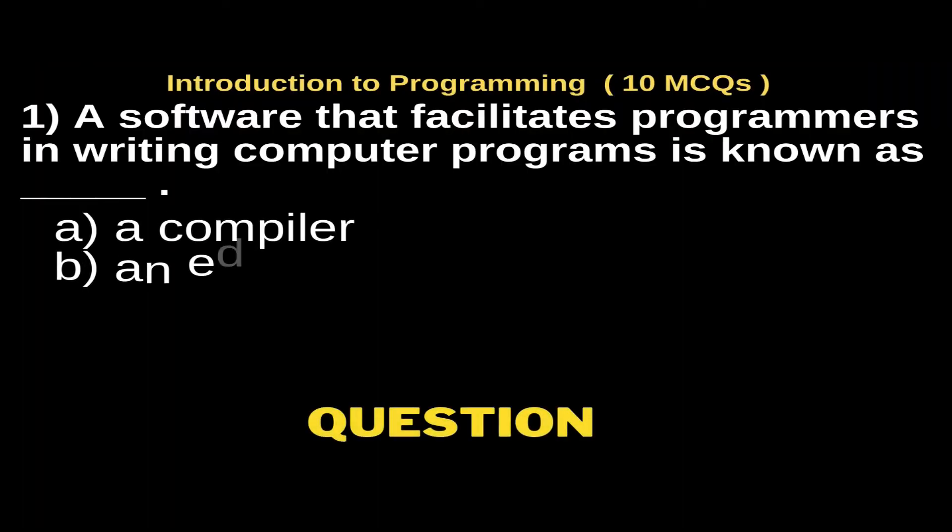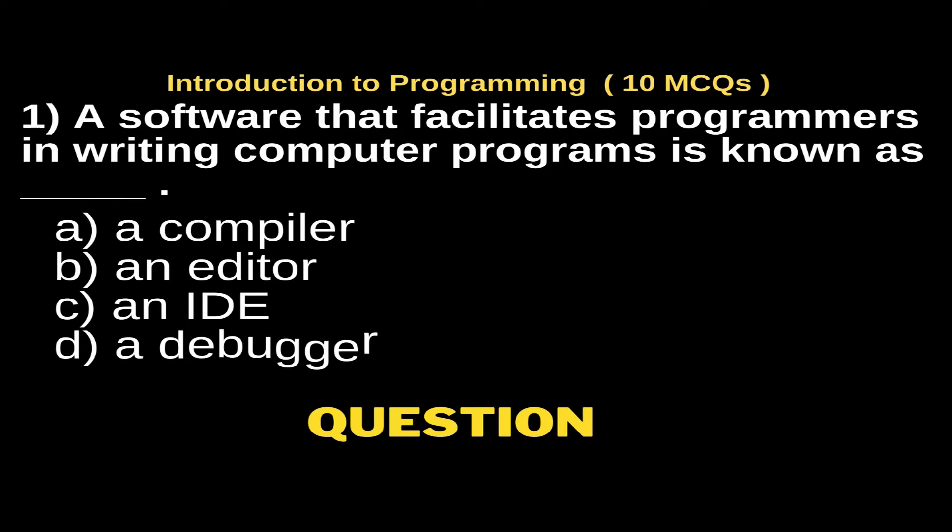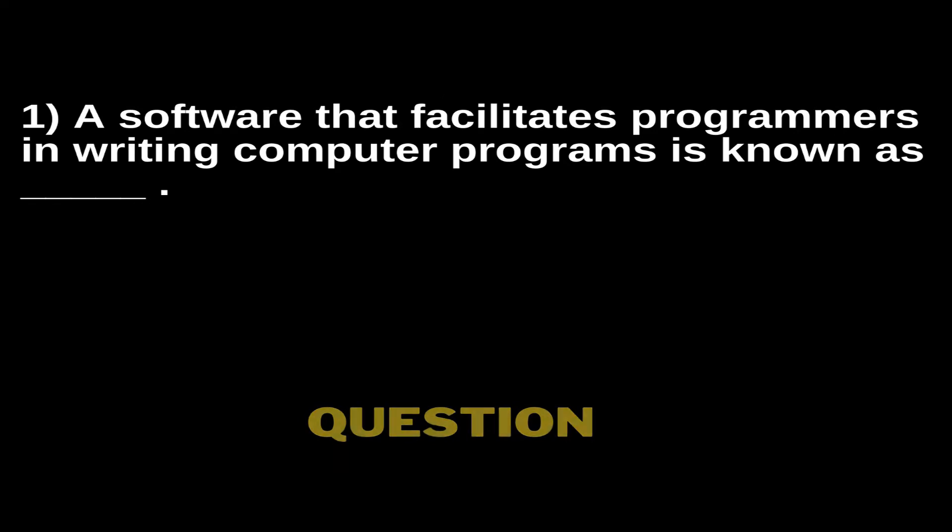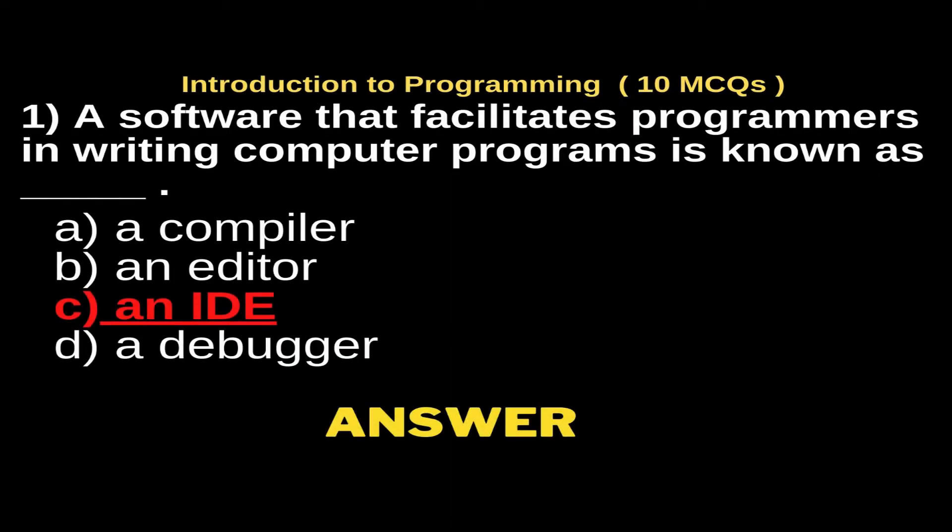Software that facilitates programmers in writing computer program is known as: Option A, a compiler; Option B, an editor; Option C, an IDE; Option D, a debugger. And the right answer is Option C, an IDE.